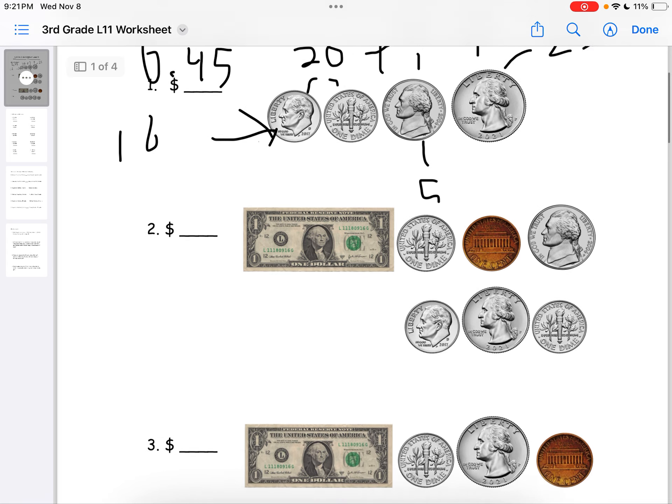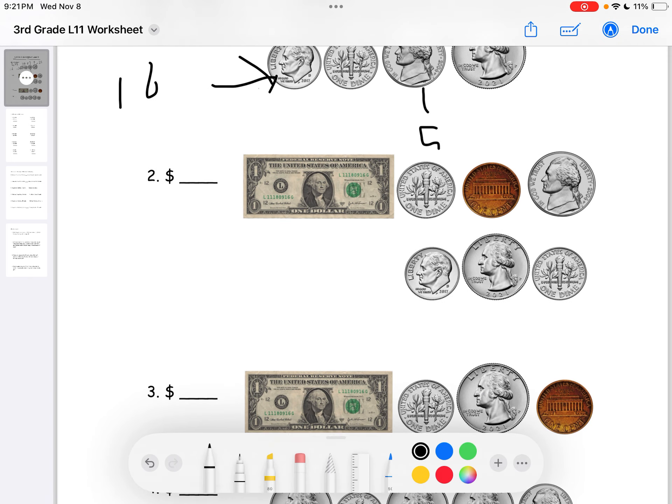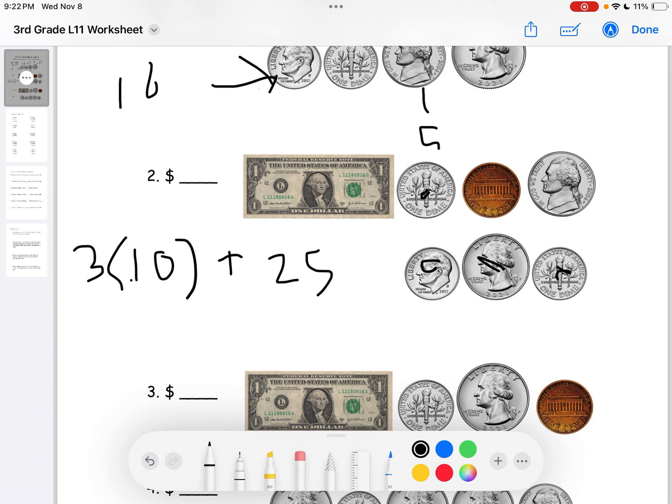Alright. We went to number 2. Looks like we have 1, 2, 3. We have 3 dimes, which is 10 cents each. $0.10. And then we also have this is a quarter. We have 1 quarter. So, we just do plus 25. $0.25.